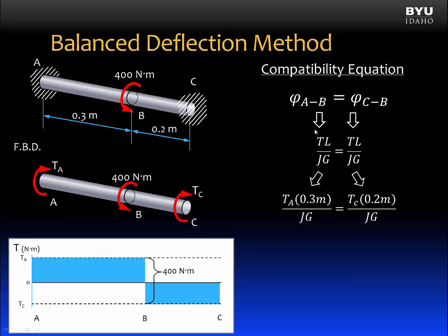Now we can expand our equation. In the first term, which corresponds to the angle of twist from A to B, the internal torque we see on the diagram is T sub A. And the length over which it's applied is 0.3 meters. That is over J and G.